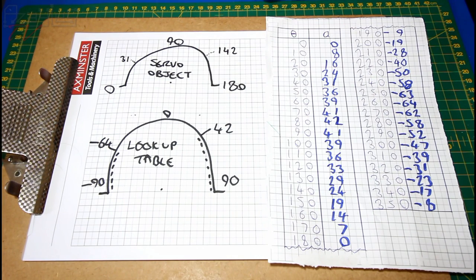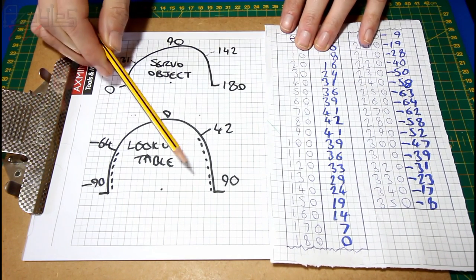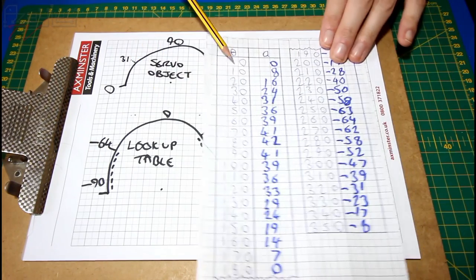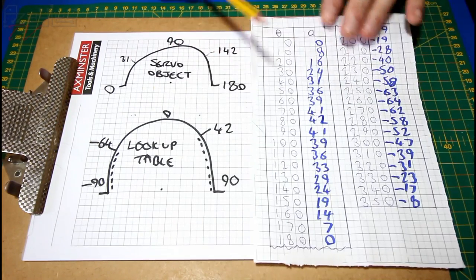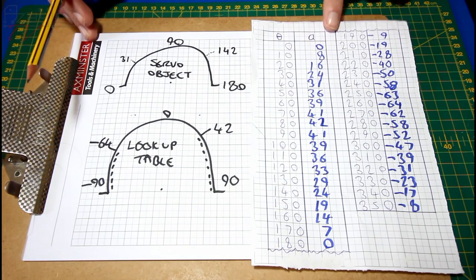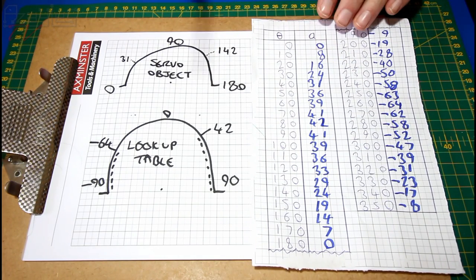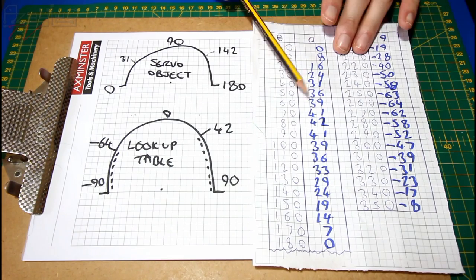The second servo has a slightly different range to what my lookup table uses. So I'm either going to have to add offsets to scale it slightly, or do a new lookup table. And I might have to do a new lookup table anyway, and I'll come back to the reasons why in a moment.